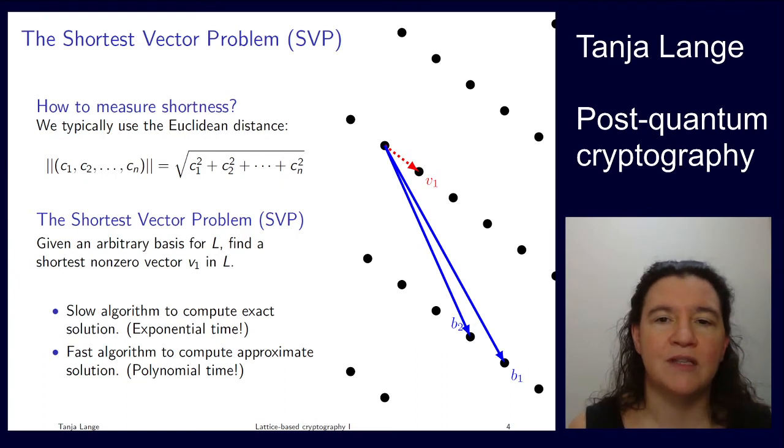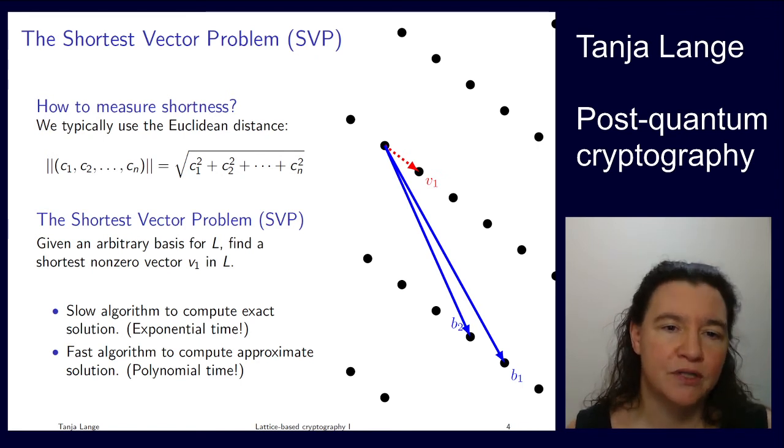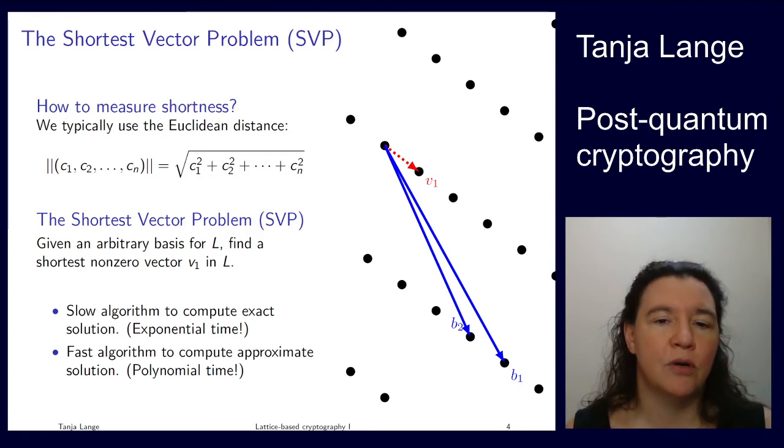There is a minimal length, but there can be one or more vectors of the shortest length. The SVP is to find one of those. It would be trivial if you would be allowed to put a zero vector, so it's the shortest non-zero vector in the lattice. We have exponential time algorithms to compute these short vectors exactly, and we have polynomial time algorithms to compute approximate solutions. The time depends on how good you want this approximation.